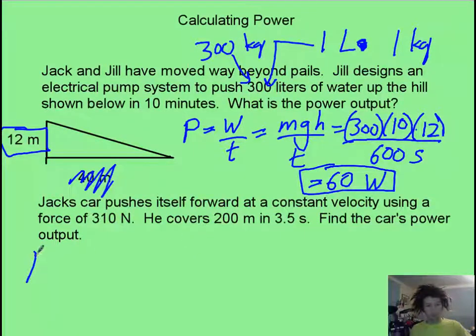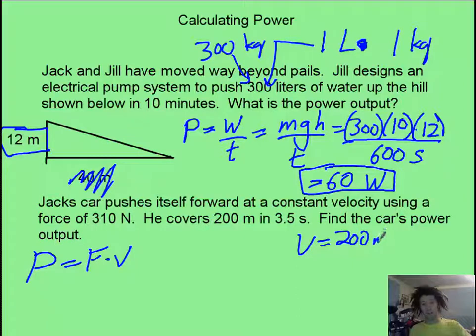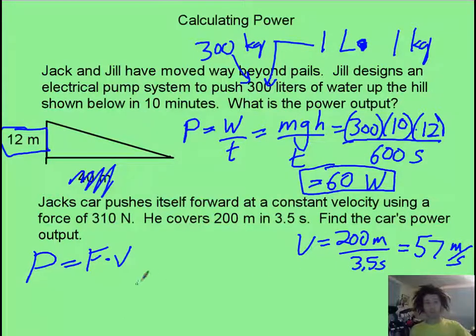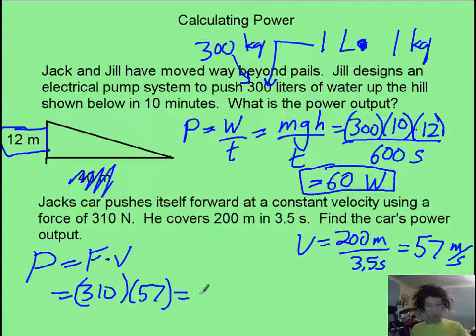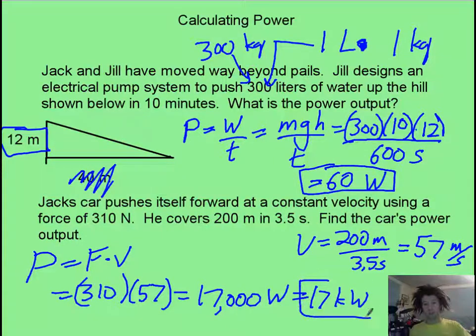Now, for Jack down here, you can think that we might try and use the force times velocity. The velocity is simply going to be the 200 meters divided by the 3.5 seconds. That gives us a value of 57 meters per second, and it is just easy. 310 times our 57, and we end up with, I believe, about 17,000 watts, or 17 kilowatts.